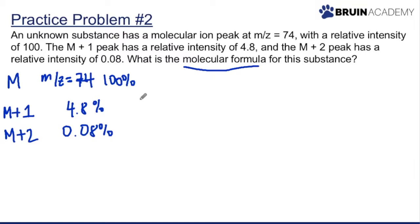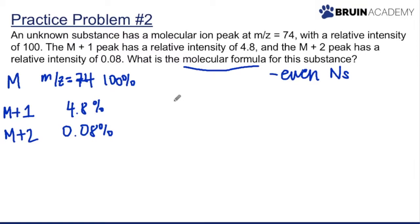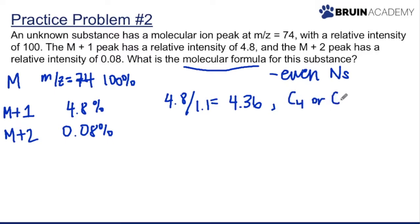Starting with the nitrogen rule: m/z = 74 is even, meaning we have an even number of nitrogens. For M+1: 4.8% divided by 1.1% gives a value of 4.36, placing us between C4 and C5 — either 4 or 5 carbons.